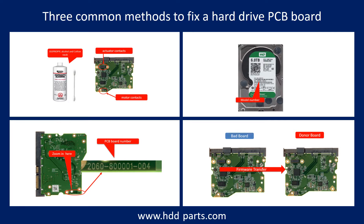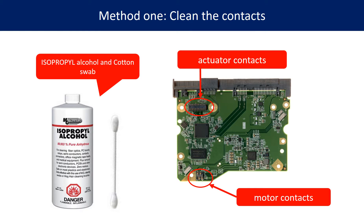There are three common methods to fix a hard drive PCB board. Method 1: Clean the contacts. Cleaning the contacts on the PCB board and also on the hard drive can fix the problem caused by poor connection between the PCB board and the hard drive.